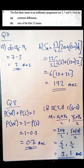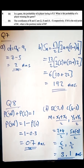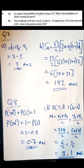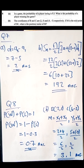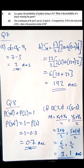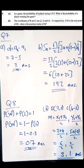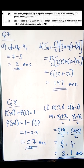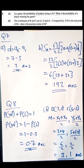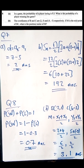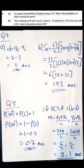Moving to question number eight, it is a probability question. It reads: in a game, the probability of a player losing is 0.3. What is the probability of a player winning? We know that all probabilities must add up to one.